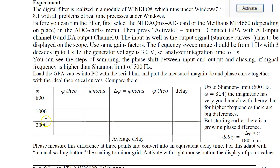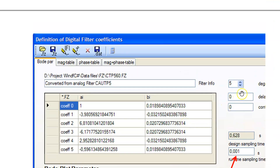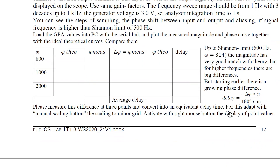You get three delay values which theoretically must all be the same. If there are small differences, take the average delay. In the program, type in the delay value you have calculated, make a third curve, and compare it with your measurement. If you have calculated the correct delay time, the measured curve should be very closely identical to this delayed phase curve. The delay is mainly dominated by the sample-and-hold mechanism, which accounts for one part of the delay time, and the second part is the calculation time of the hardware. This calculation time can be measured with an internal software measurement using a stopwatch function.